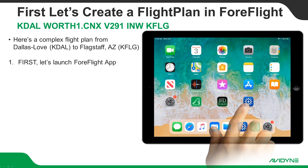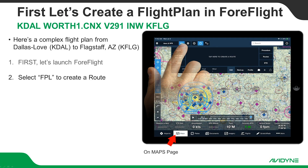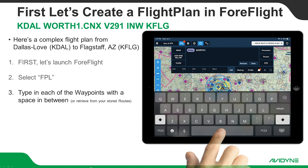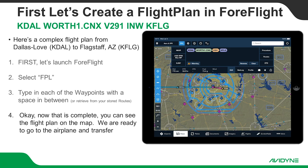The first thing you have to do is launch the ForeFlight app. Imagine we're sitting at home building our flight plan. There's a little flight plan button on the Maps page at the bottom. Hit the little flight plan button and now you can start typing out your clearance. You may have gotten your clearance right through ForeFlight, but I'm just going to manually enter one here. Type in each of the waypoints separated by a space, and after you're done you'll have the whole thing sitting there completed and you're ready to go out to the airplane.